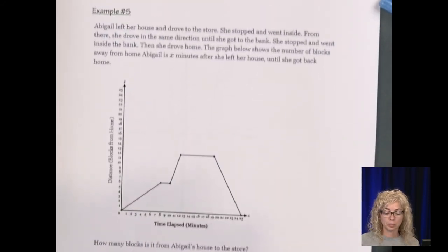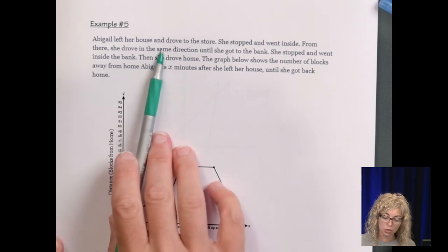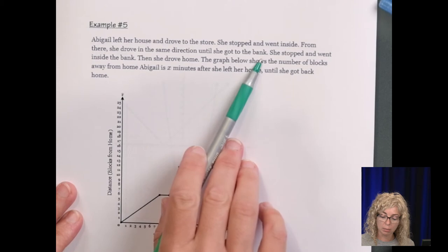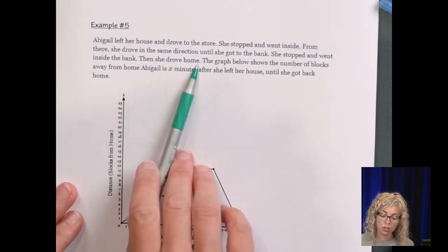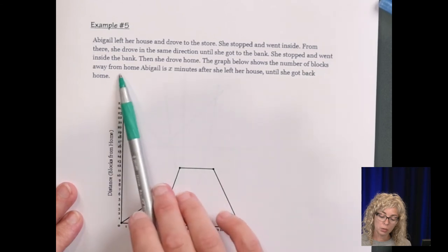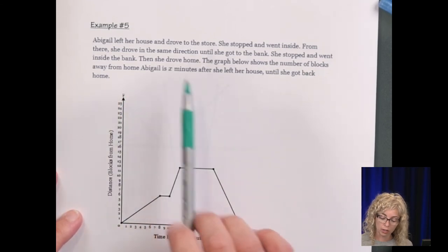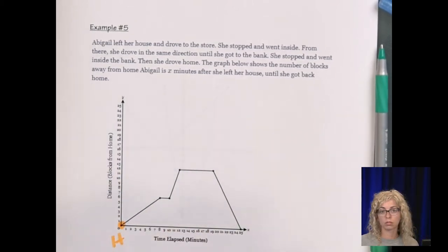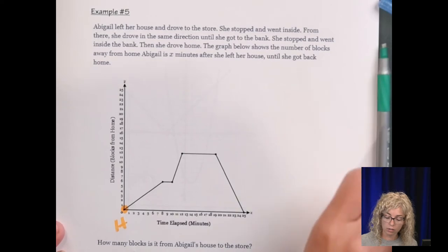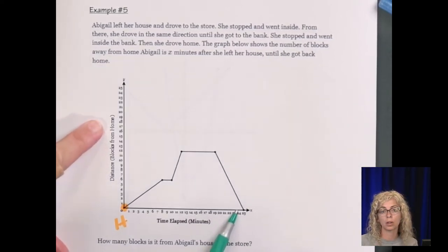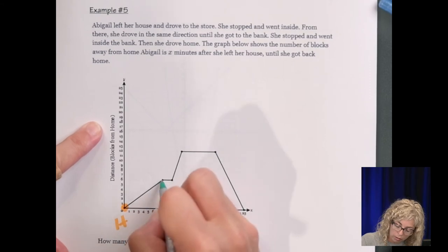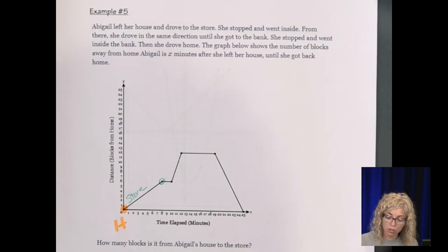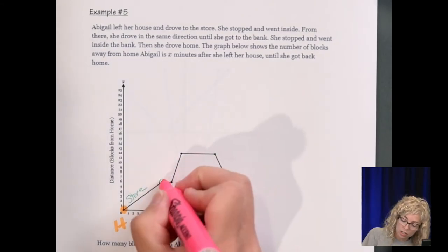Number 5. Abigail left her house and drove to the store. She stopped and went inside. From there she drove the same direction until she got to the bank. She stopped and went inside the bank. Then she drove home. The graph below shows the number of blocks away from home Abigail is driving. So here when she starts. So here she's at her house. So I'm going to put H. She's at her house and we're looking at over time, how many blocks is she away from home?